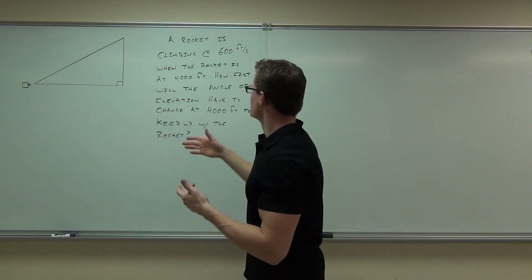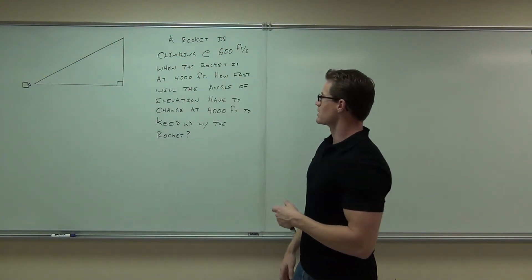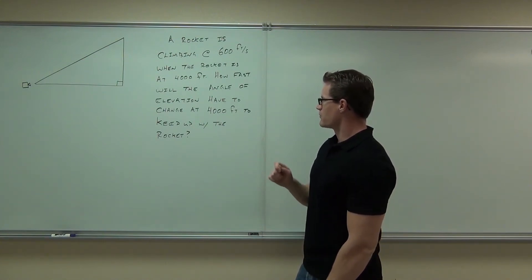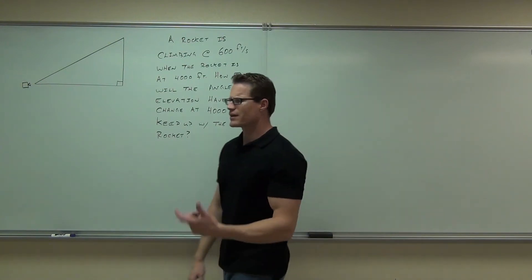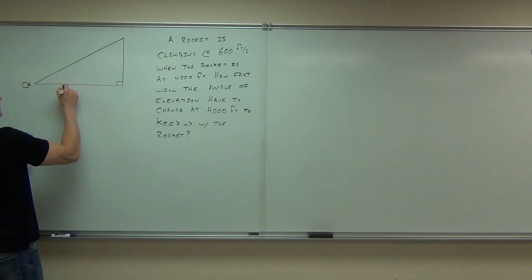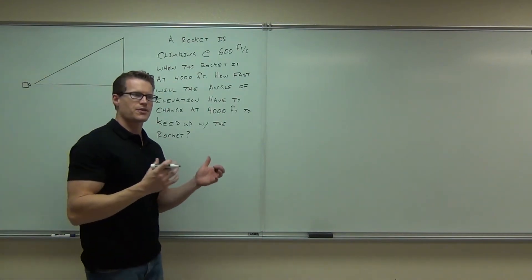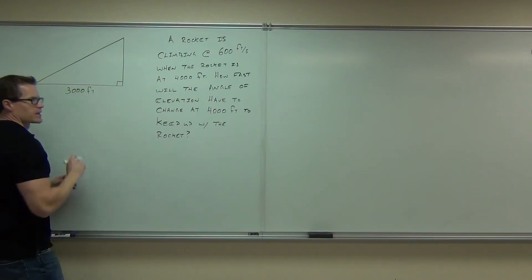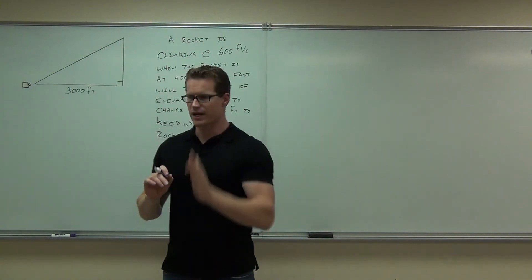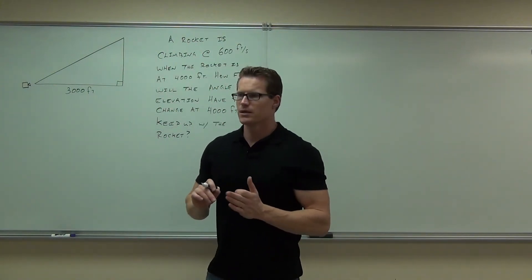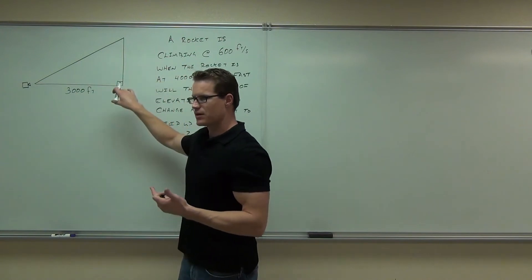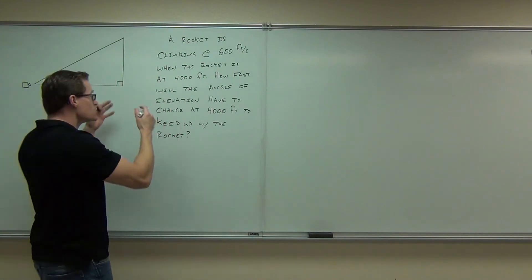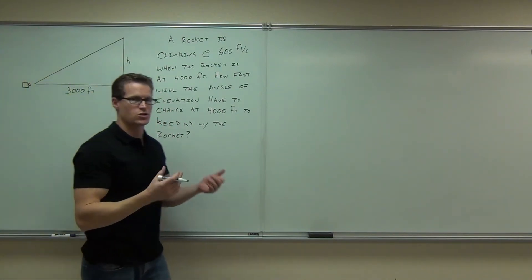That's the plan. So what we want to do is, if this rocket is climbing at 600 feet per second when the rocket's at 4,000 feet, how fast will the angle of elevation have to change at 4,000 feet to keep up with the rocket? Now here's the deal: this distance is going to be fixed. Let's say that we're 3,000 feet away from the rocket. So our camera's not going to move, and the rocket's going straight up. Because we have the rocket's height, the rocket's height is going to be changing. So we can't just call this 4,000 right now — we have to call it H, because that is a variable that's going to be changing throughout our problem.